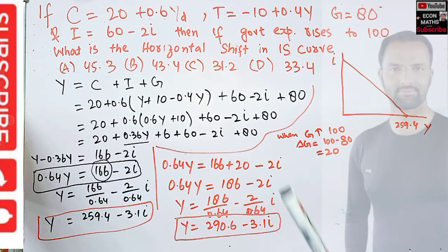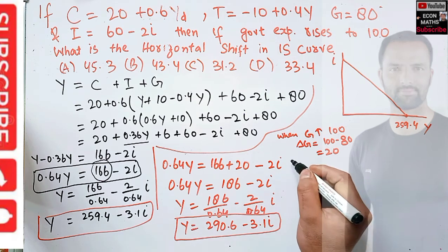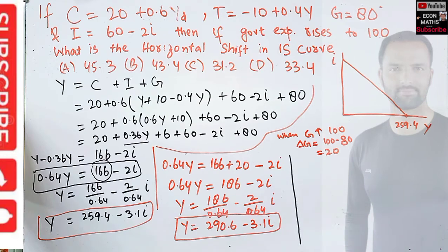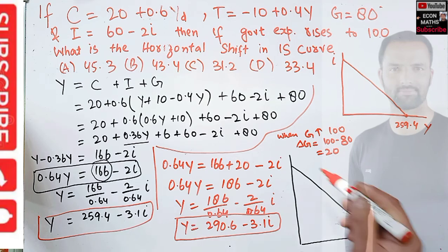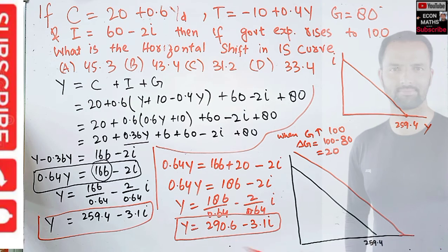Let me draw it again. This was our original IS curve with intercept 259.4. After G has increased, our IS curve has shifted to this and our new intercept is 290.6.